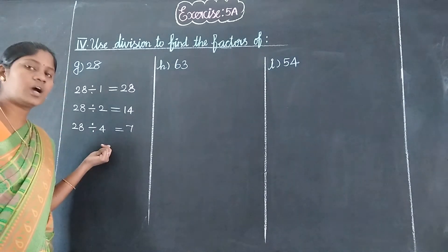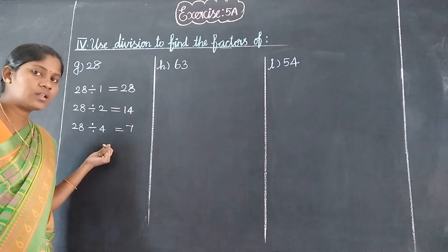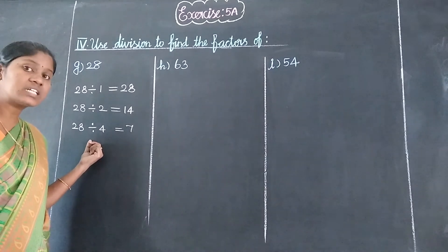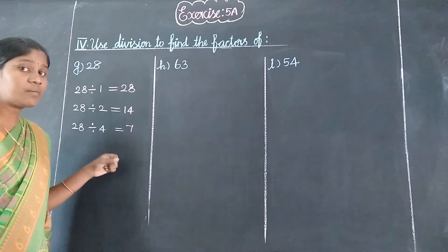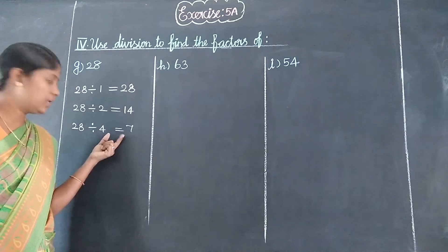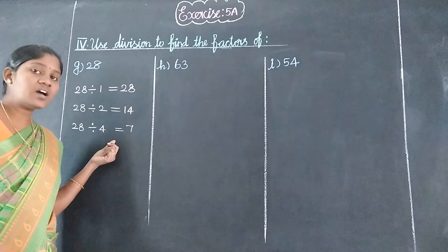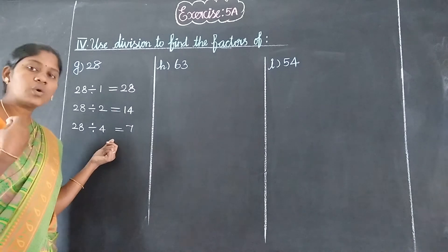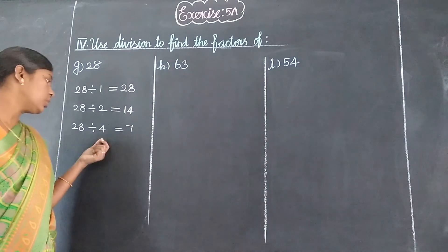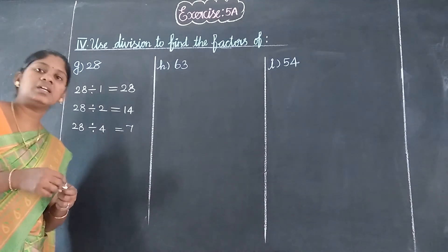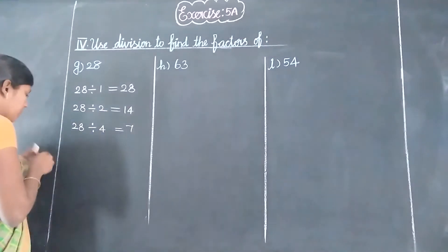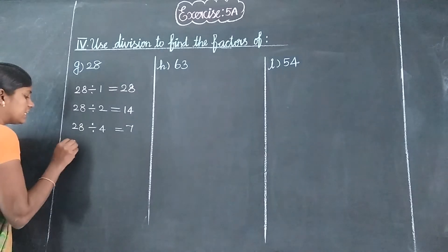Next 5 table, no. 6 table, no, because 4 sixes are 24, 5 sixes are 30. So 28 is not divisible by 6. Next, 7 table, yes. When we get the same factors, like 4 and 7, we stop because they are the same factors repeated.